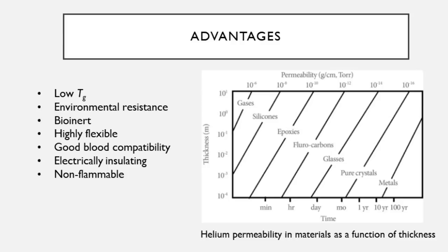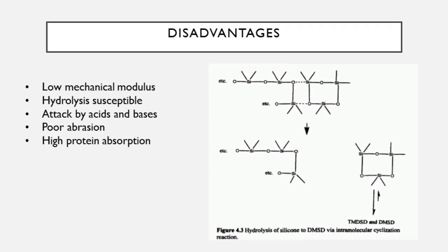Silicone's success in medical applications is due to several advantages. First, they have a low glass transition temperature, ensuring they remain in the rubbery, amorphous state at body temperature — also applicable in aerospace applications with large temperature swings, where silicones maintain ductility and flexibility. Silicones have great resistance to environmental factors, making them relatively bioinert in the body, and their low Tg makes them very flexible at body temperature. They also exhibit great blood compatibility — making them excellent for catheters — and are electrically insulating, hence their use in pacemakers. They are also non-flammable.